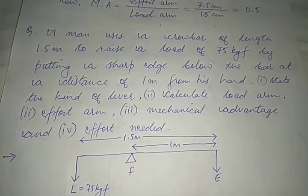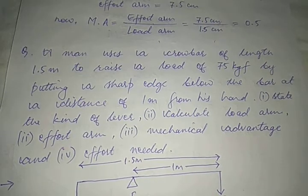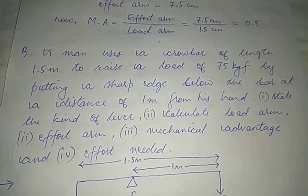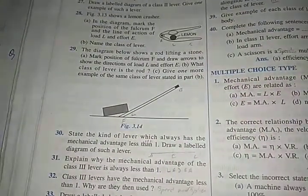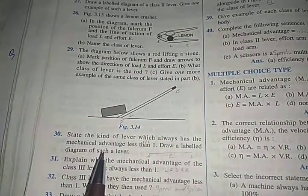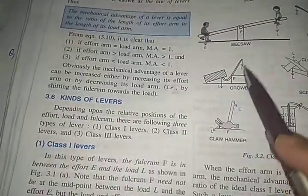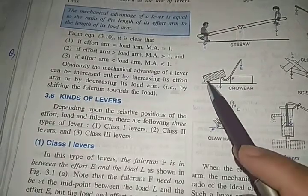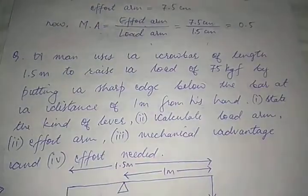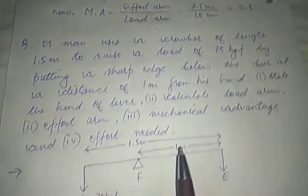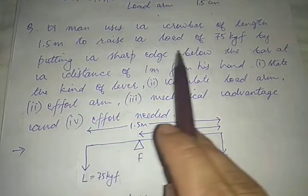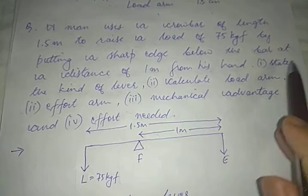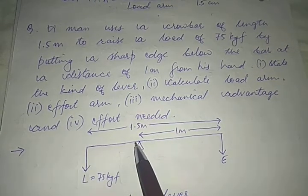Second question: a man uses a crowbar — a crowbar is basically a simple rod used to lift a load. A crowbar of length 1.5 meters is used to raise a load of 75 kilogram-force by putting a sharp edge below the bar at a distance of 1 meter from its end. This sharp edge acts as the fulcrum, and the load of 75 kgf is on the side.